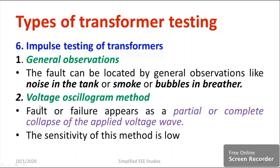This is the first observation, known as general observation. Moving on to the second procedure — voltage oscillogram method. This is done by measuring the voltage waveform shape. A fault or failure appears as a partial or complete collapse of the applied voltage waveform. You compare the input and output waveforms — input from the impulse generator, output from across the transformer winding — and if there is a failure, a sudden voltage drop will occur. However, the sensitivity and accuracy of this method is somewhat poor.